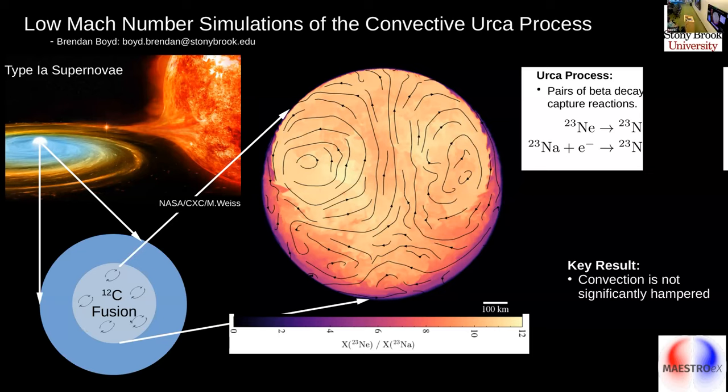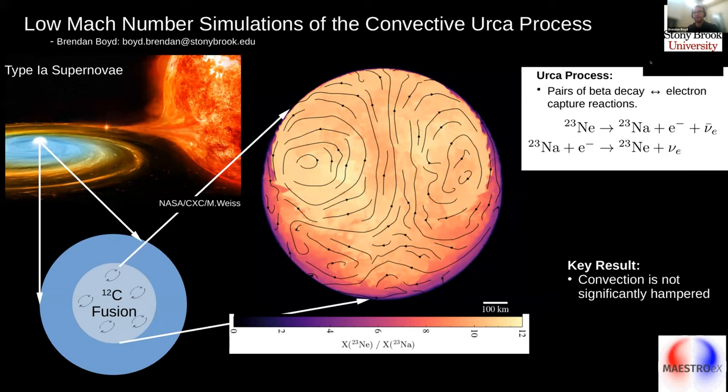Eventually, this carbon fusion will end up exploding the star in the supernovae, but for about a thousand to ten thousand years prior to this, it'll just be driving convection mixing material in the center, and that's the region that I'm most particularly interested in.